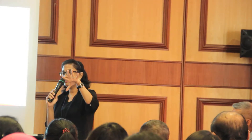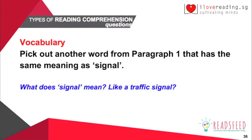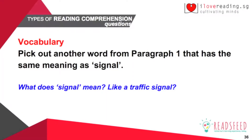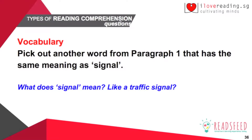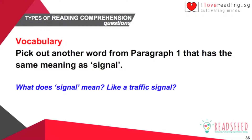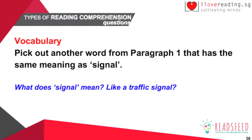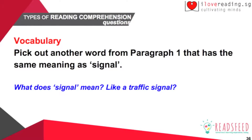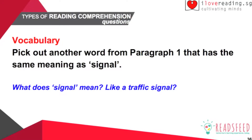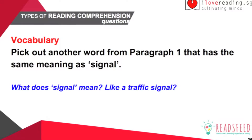We can take it from there — like a traffic signal, it's like an indicator. So we go back to the paragraph and we look at this. We look through the paragraph and you will see that this one — 'cue for other kids to start picking on me.' Sorry about the double O. So here, 'signal for the other kids to start picking on me.'